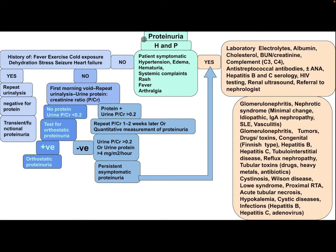In the approach to a child with proteinuria, after history and physical examination, determine if the patient is symptomatic — having hypertension, edema, hematuria, systemic complaints, rash, fever, or arthralgia. If yes, the patient needs laboratory work including electrolytes, albumin, cholesterol, BUN, creatinine, complement C3 and C4, anti-streptococcal antibody, ANA, hepatitis B and C serology, HIV test, renal ultrasound, and referral to a nephrologist.